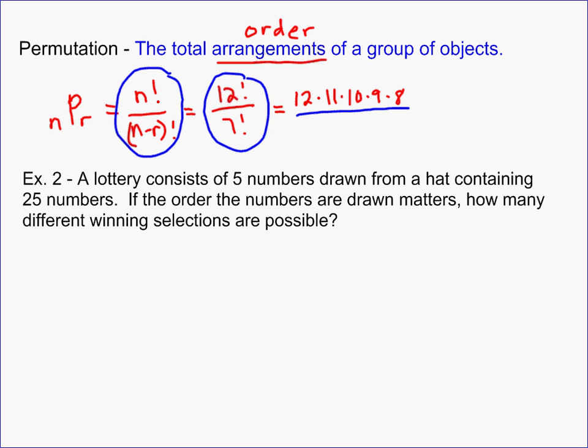So on example two, it says a lottery consists of five numbers drawn from a hat containing 25 numbers. If the order the numbers are drawn matters, which means if you don't have your lottery numbers in the right order, then you don't win, how many different winning selections are possible? Well, you've got 25 numbers, so 25P, you want to select five of them. So it's just going to be, you can either do 25 factorial over 20 factorial, or you can do a shortcut, which would be to simplify in your head, which would be 25 times 24 times 23 times 22, and we just count down five times. And when you multiply that out, you get 6,375,600. And so there are that many different winning combinations for this particular problem. That's because order did matter.